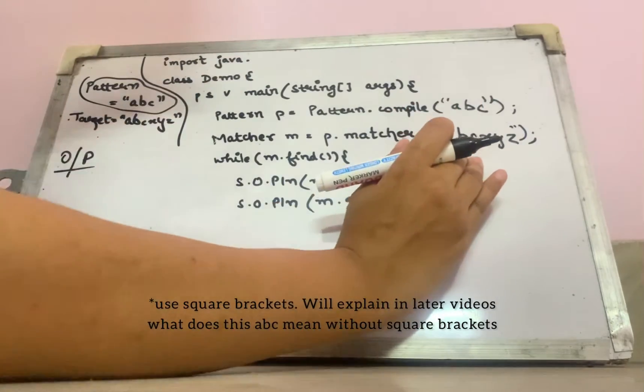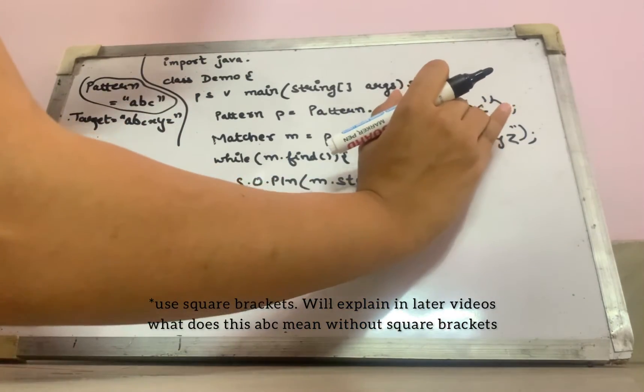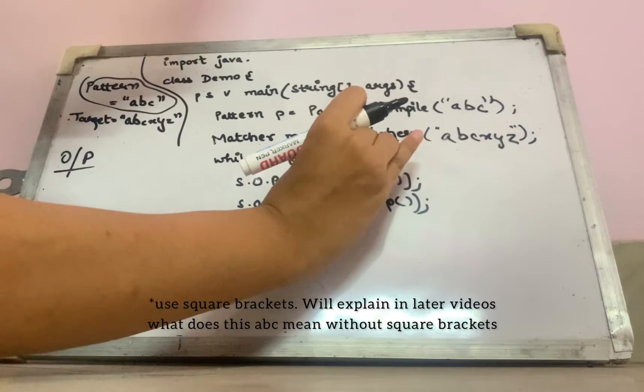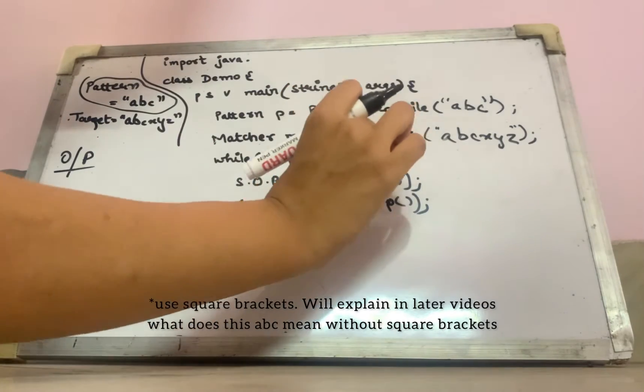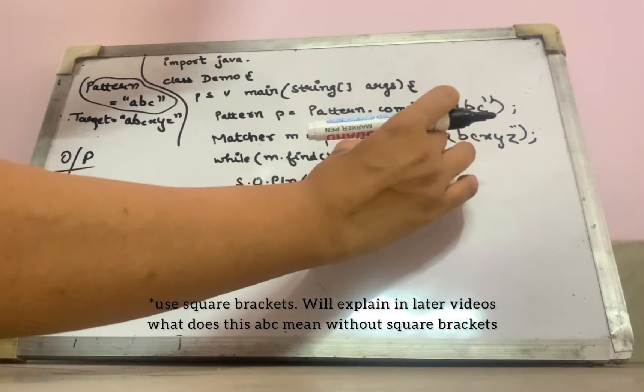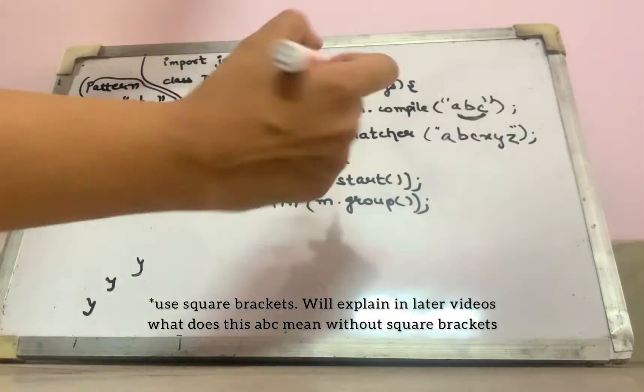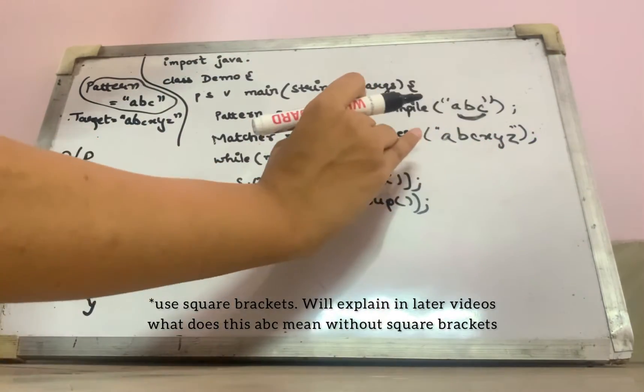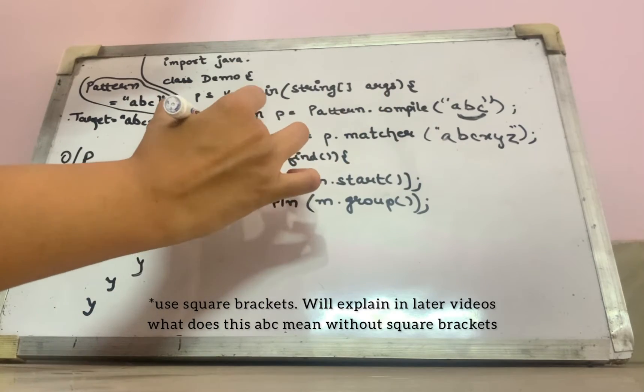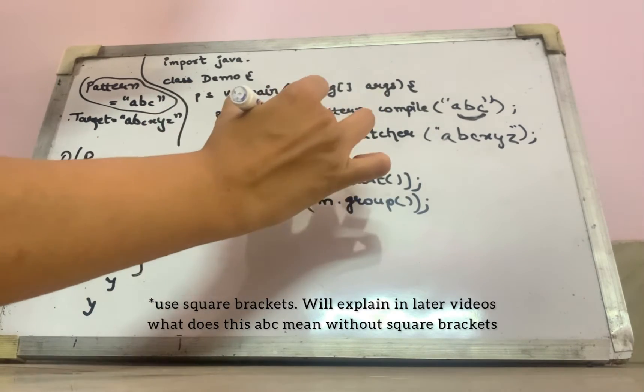This is my pattern. Matcher method of pattern class is going to find the match in my target string using this pattern. And what does it going to return? It is going to return me the matcher class object.